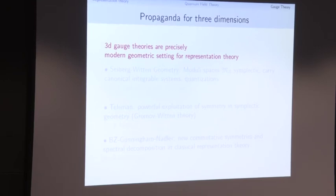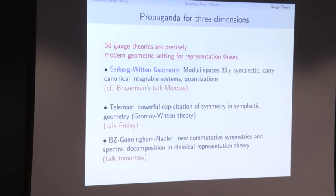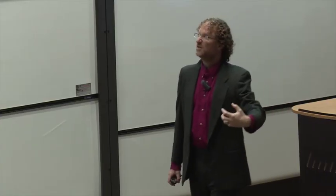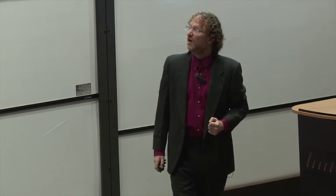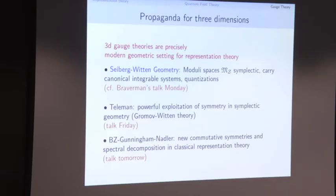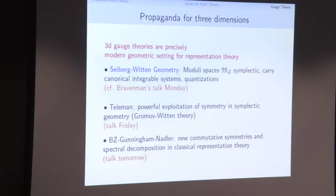Not in two dimensions where we get discrete things, but in three dimensions we get really interesting structures. For example, in Sasha Braverman's talk on Monday, one of the great discoveries in gauge theory was called Coulomb branch geometry: moduli spaces in three-dimensional gauge theories have an extremely rich structure — they're hyperkähler spaces, they carry integrable systems, they have canonical quantizations. If you come to Konstantin Teleman's talk on Friday, you'll see a powerful exploitation of symmetry in symplectic geometry, Fukaya categories, Chern-Weil theory, the A-model.